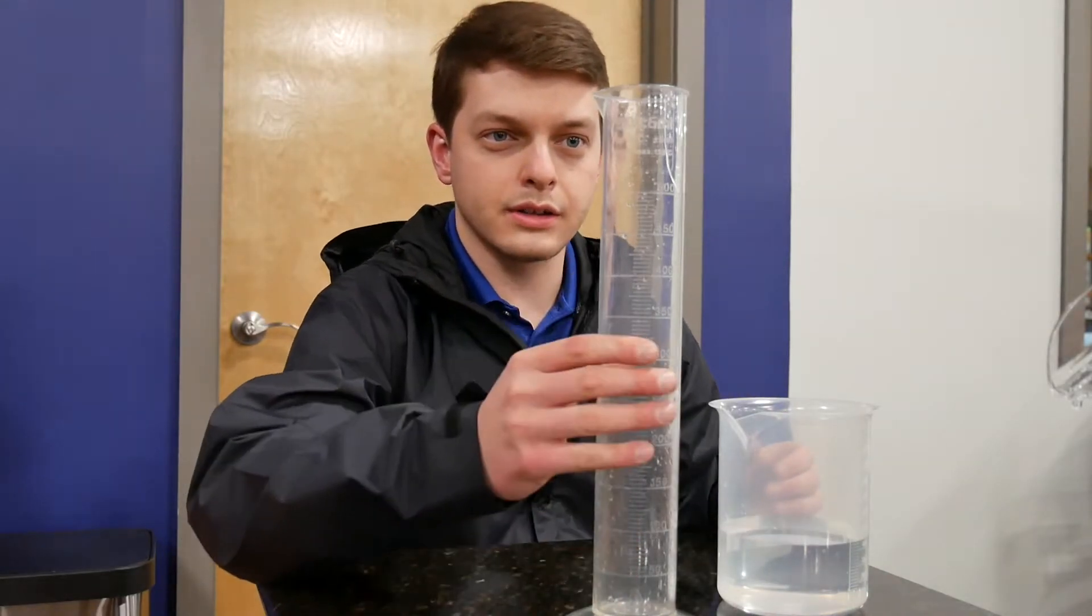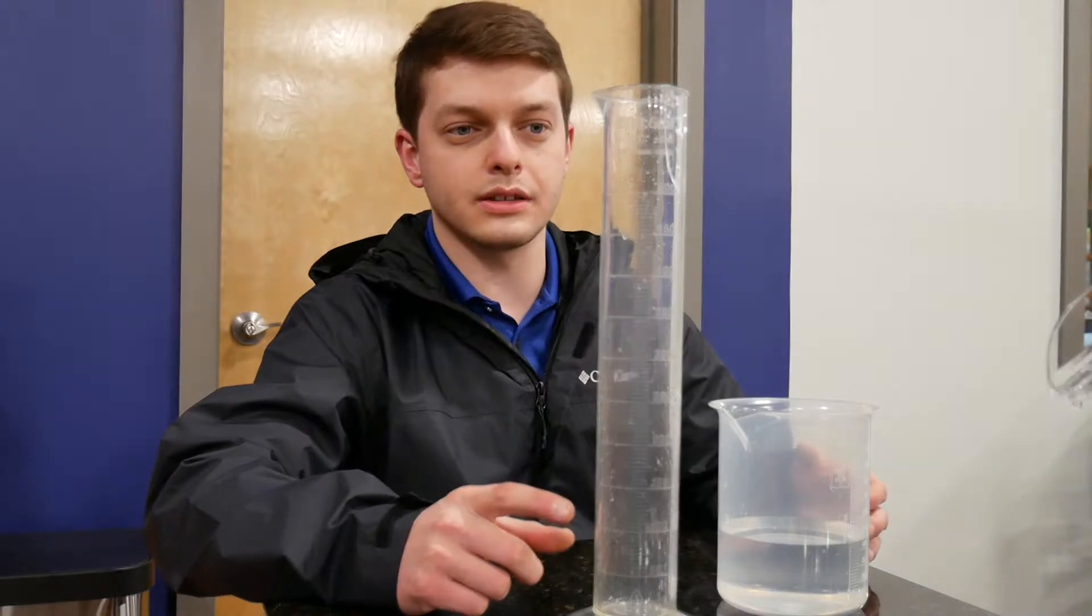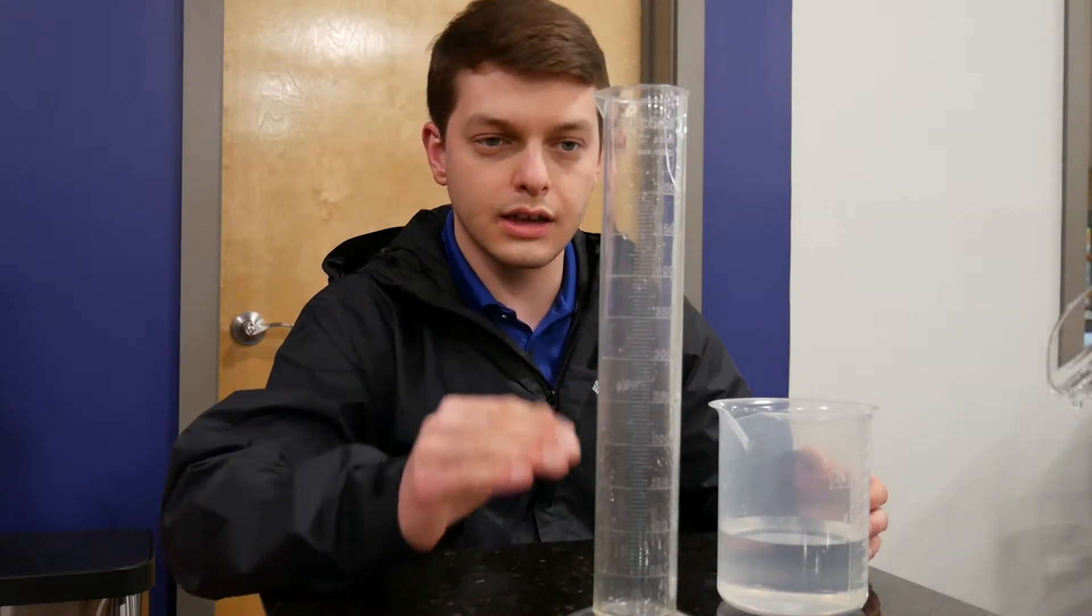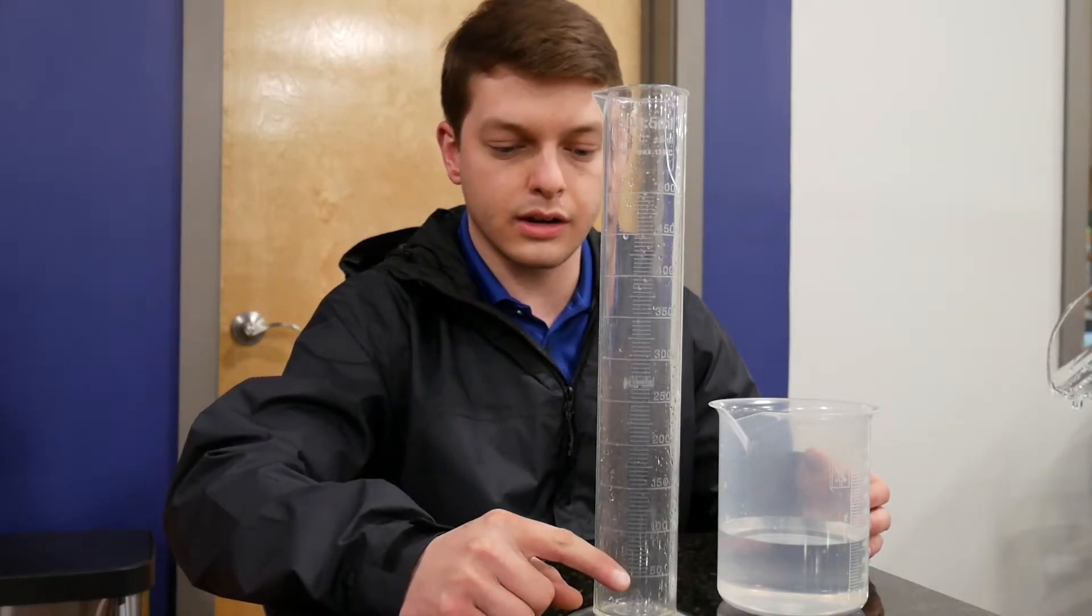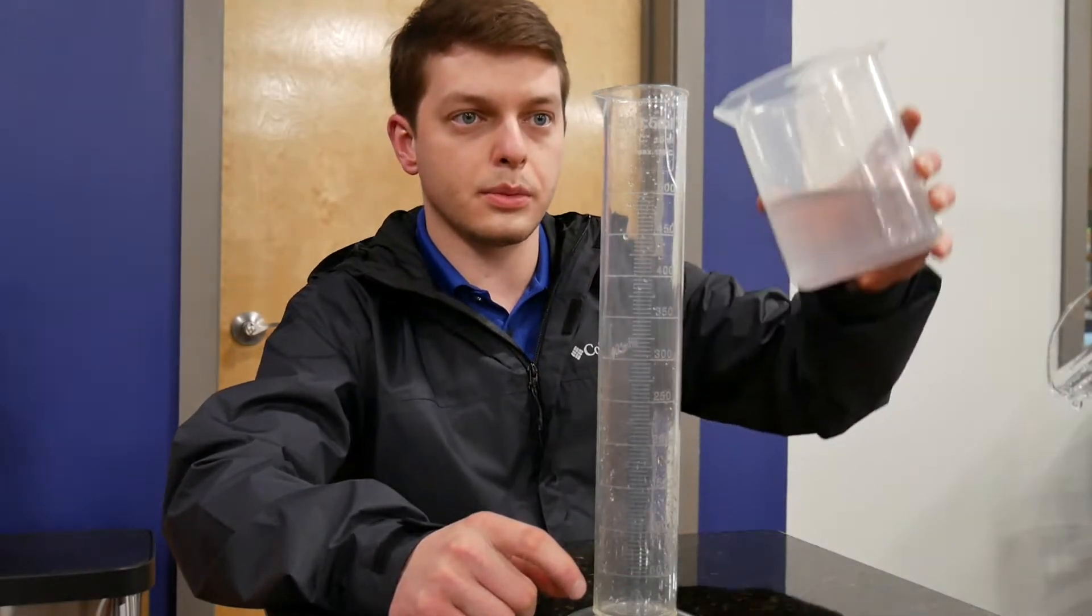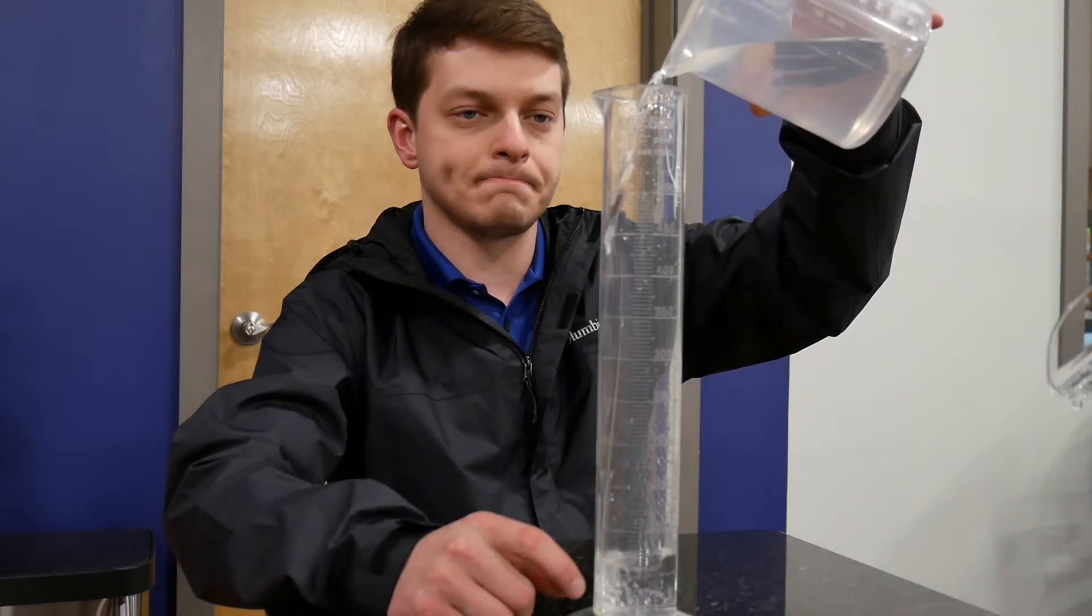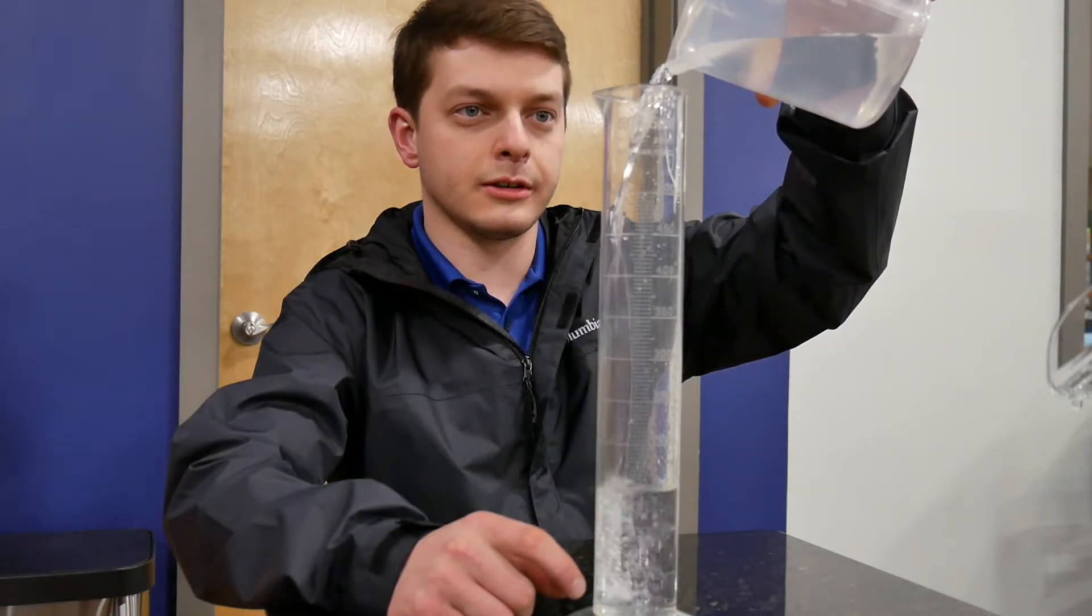Okay guys, so we have our graduated cylinder here and we have our beaker of water here. With this graduated cylinder, it measures in milliliters and each tick mark is in five milliliter increments. So I'm going to go ahead and slowly pour the water from the beaker into the cylinder, then we'll read it.